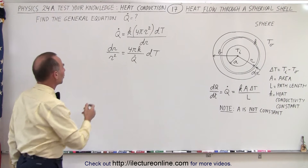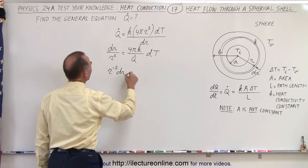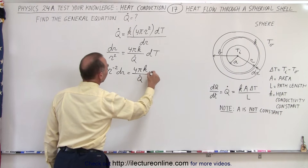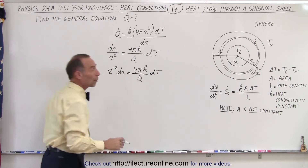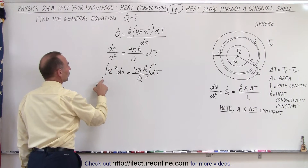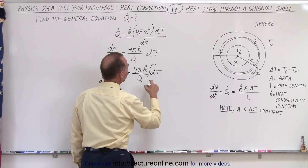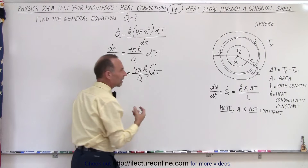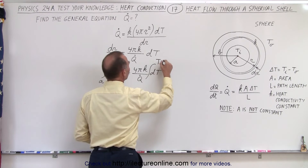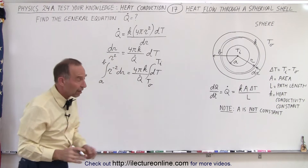To integrate, we put R squared in the numerator, writing this as R to the minus 2 times dr equals the constant 4πK divided by Q dot, times dT. We integrate both sides: R is integrated from A to B, and the temperature is integrated from the temperature inside to the temperature outside. We want a positive quantity, so we put T inside at the top and T outside at the bottom — higher temperature minus lower temperature.